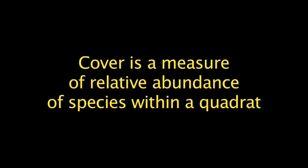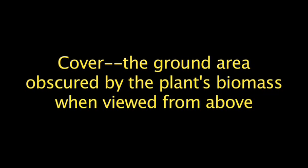Cover is one of several measures that can be used to estimate the relative abundance of plants. Various ecologists have used different definitions of cover. We will define cover as that area of ground obscured by the plant's biomass when viewed from above. Cover is typically measured as a percentage of the total quadrat area. Cover does not very well account for differences in height or overall biomass of plants, but nonetheless can be a useful relative measure of abundance.